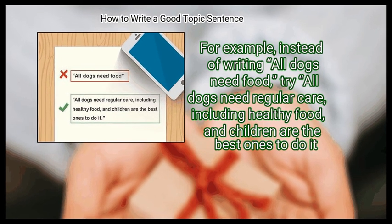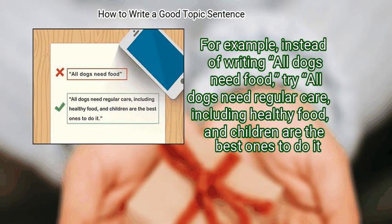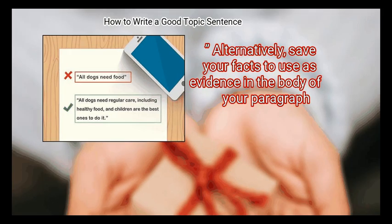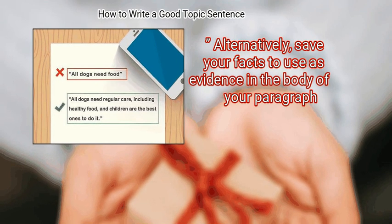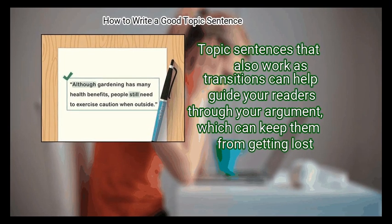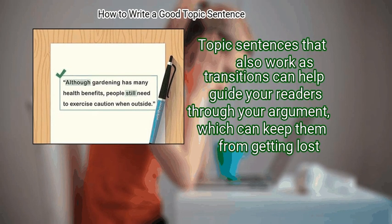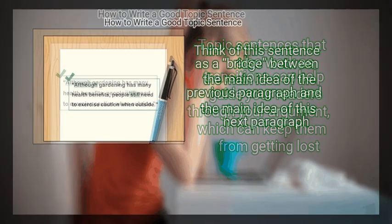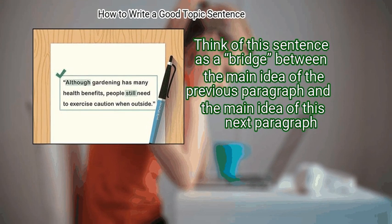Avoid presenting only facts in your topic sentence. While facts may be interesting, they do not introduce the reader to your paragraph nor draw the reader in. If you wish to include a fact, also include your own input. For example, instead of 'all dogs need food,' try 'all dogs need regular care, including healthy food, and children are the best ones to provide it.' Alternatively, save your facts to use as evidence in the body of your paragraph. Finally, use the topic sentence as a transition.